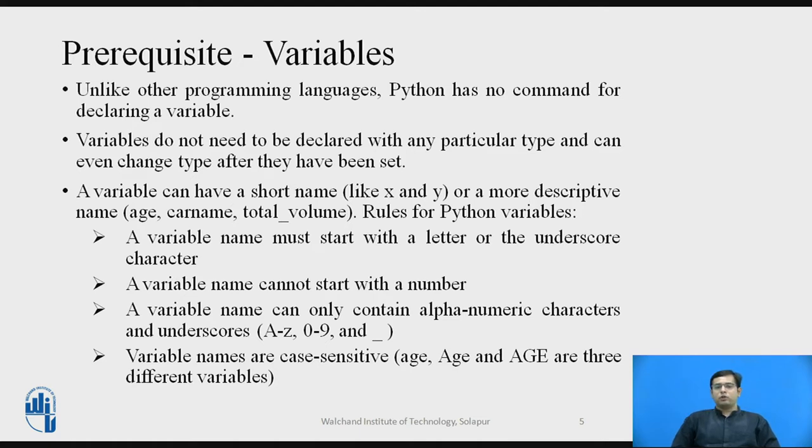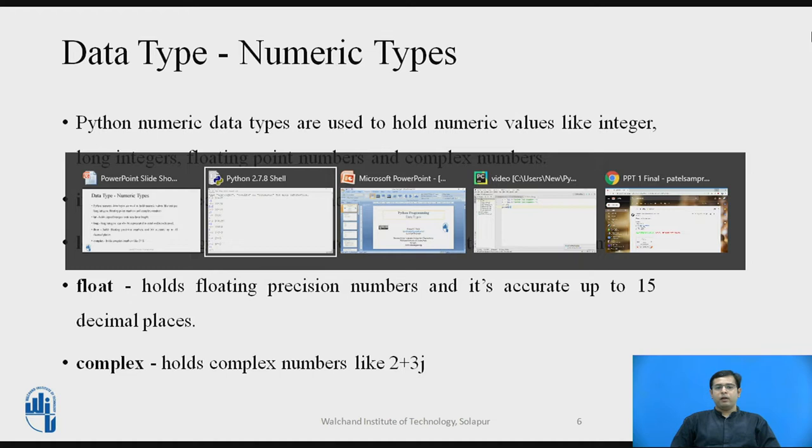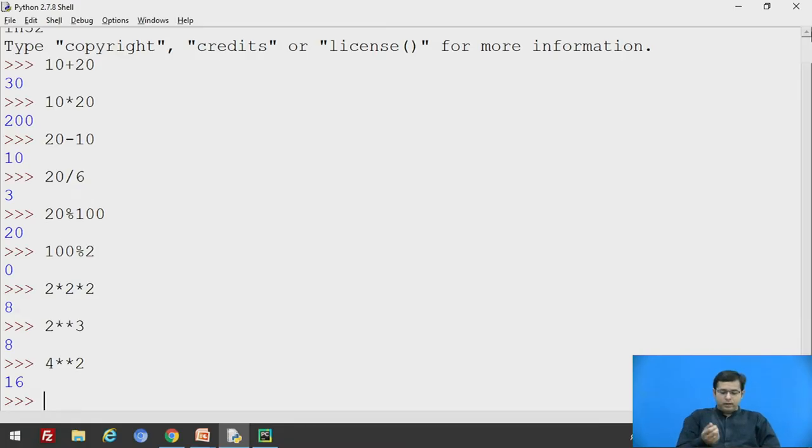Now as you have understood operators and variables, we will move on to data types. In Python, there are three data types: numeric types, boolean type and string type. In numeric type, it holds integer value, long, float and complex as well. Long can also hold octal and hexadecimal values. So we will see some examples regarding the data types.